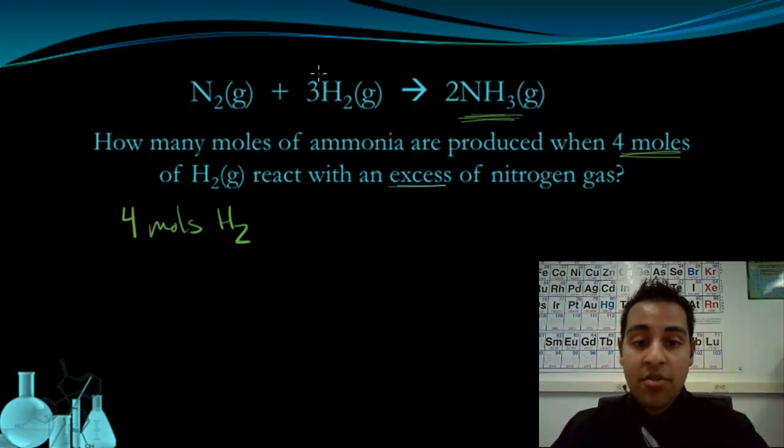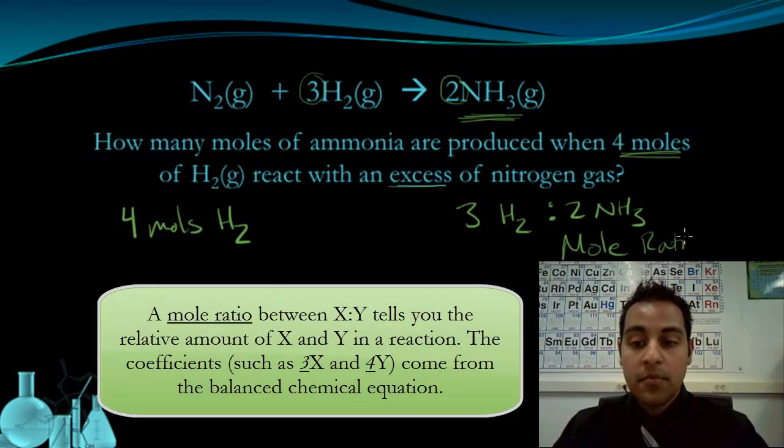From the equation, I can see that there are three hydrogens for every two ammonia. So three H2 for every two ammonia. And I can make use of this ratio. This ratio I just wrote here is what we call a mole ratio. It is a ratio of the number of moles of each substance in a balanced chemical equation.